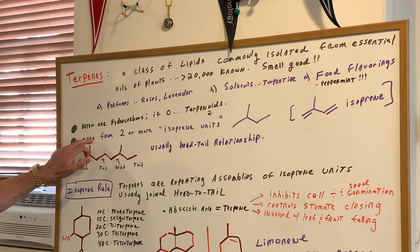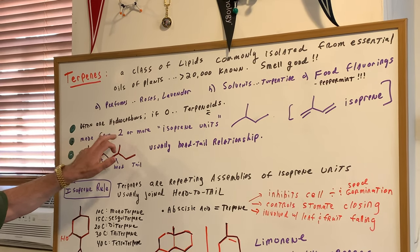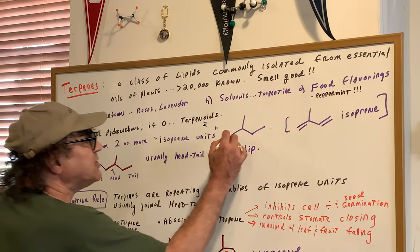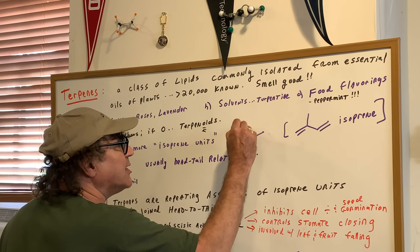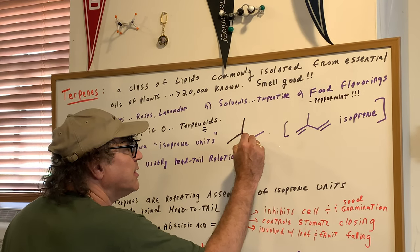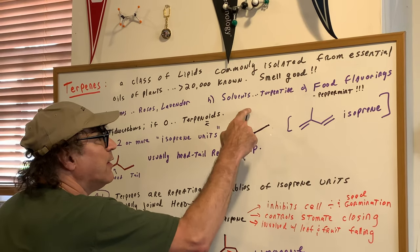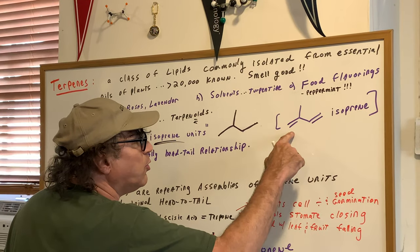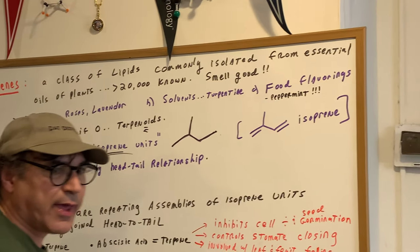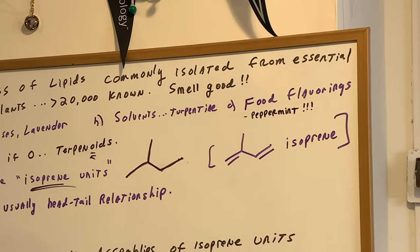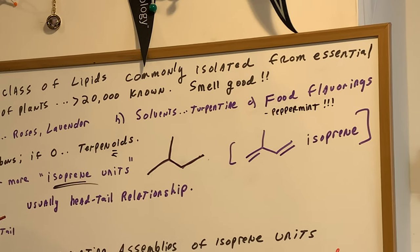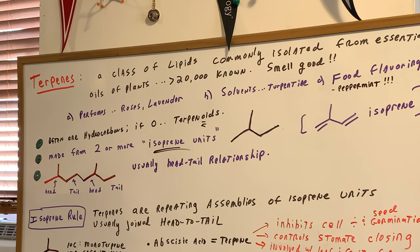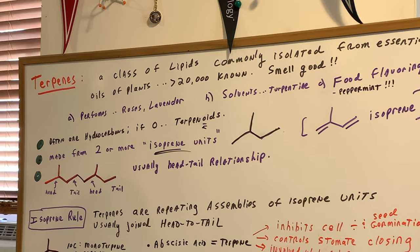These terpenes are going to be synthesized from two or more what we call isoprene units. This is what we call an isoprene unit. I used to teach my kids, I call it a little fish hook. You see like it looks like a little fish hook? There's five carbons. The reason why we call it an isoprene unit is because this is the structure of a chemical we call isoprene in organic chemistry.